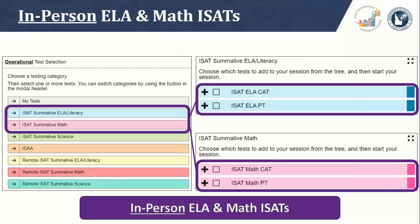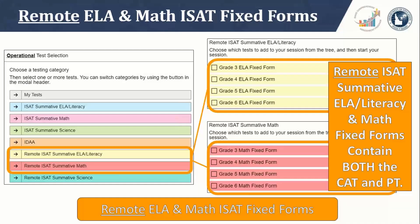Let's go over the in-person ELA and math TA test trees. The in-person ELA and math ISATs are on separate branches. Clicking on the ISAT summative math branch brings you to the next level in the hierarchy, where the ISAT math CAT and the ISAT math PT are on separate branches — allowing the in-person CAT and PT to be taken in different test sessions. The remote ISAT ELA and math summatives are on their own branches. When you click on remote ISAT summative math, you are taken to the available fixed forms, where our testing vendor has combined the CAT and PT portions into a fixed form.